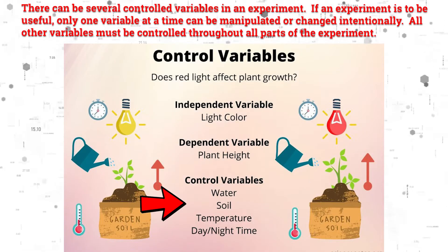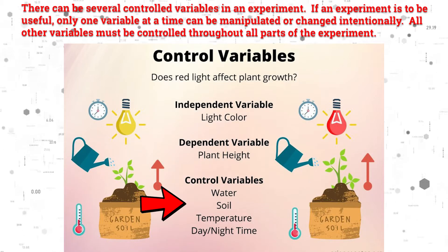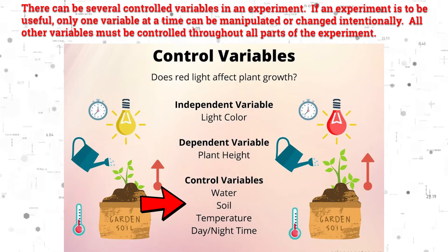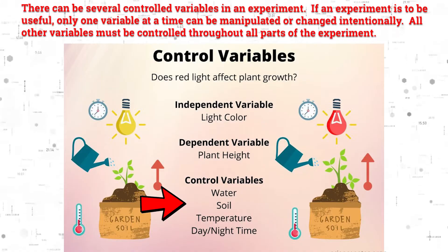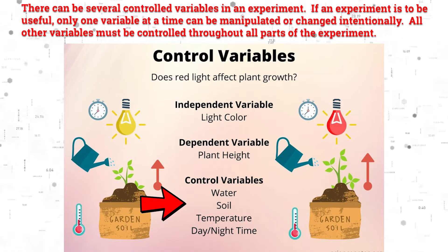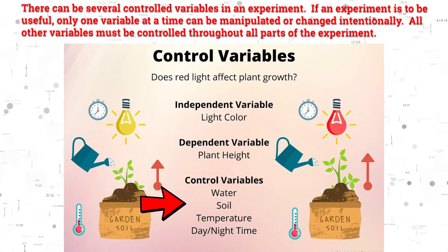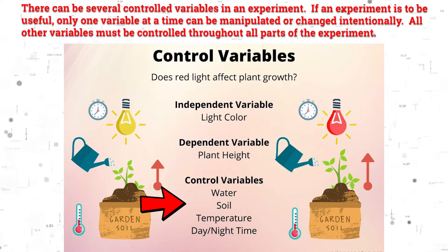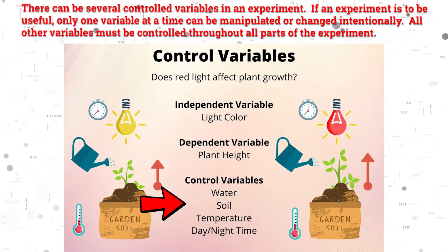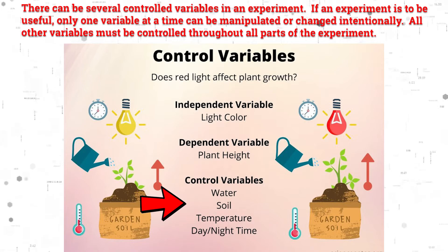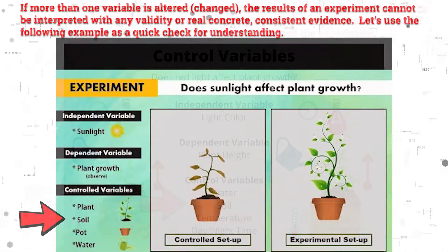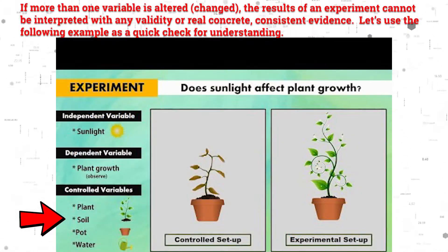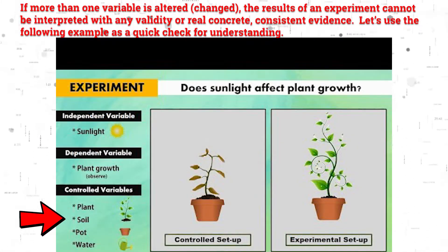There can be several controlled variables in an experiment. If an experiment is to be useful, only one variable at a time can be manipulated or changed intentionally. All other variables must be controlled throughout all parts of the experiment. If more than one variable is altered or changed, the results of an experiment cannot be interpreted with any validity or real concrete or consistent evidence.